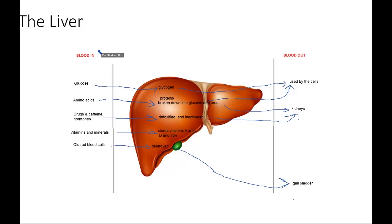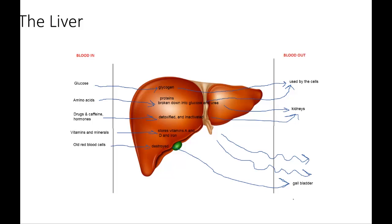Now when all of this is happening, this is metabolism. You learned about metabolism and you learned that in the process of metabolism heat is produced. So the liver is a very active area, and when all of this is happening, lots and lots of heat is being produced and that heat is used to warm your body. The heat is carried through the blood all throughout your body.